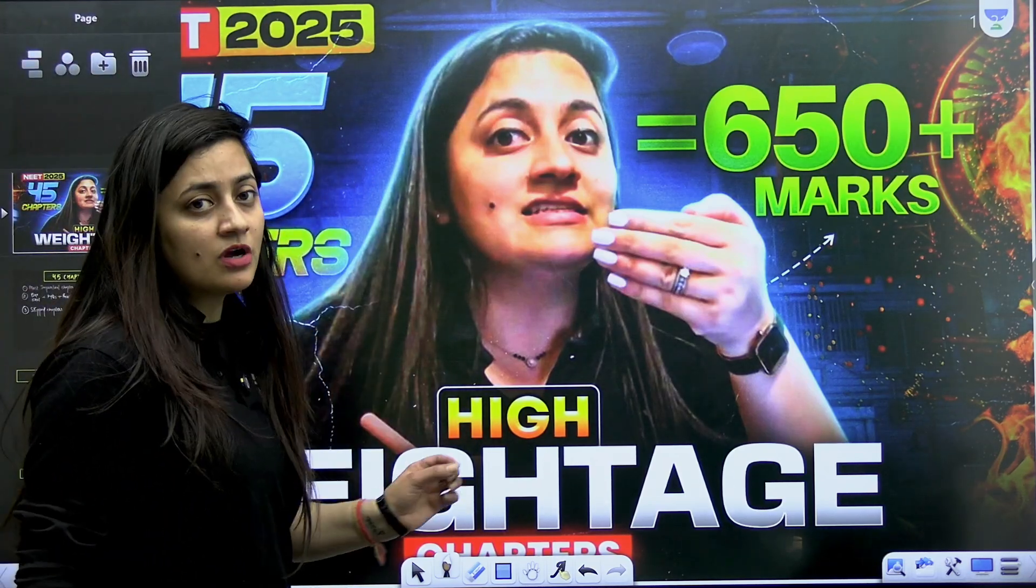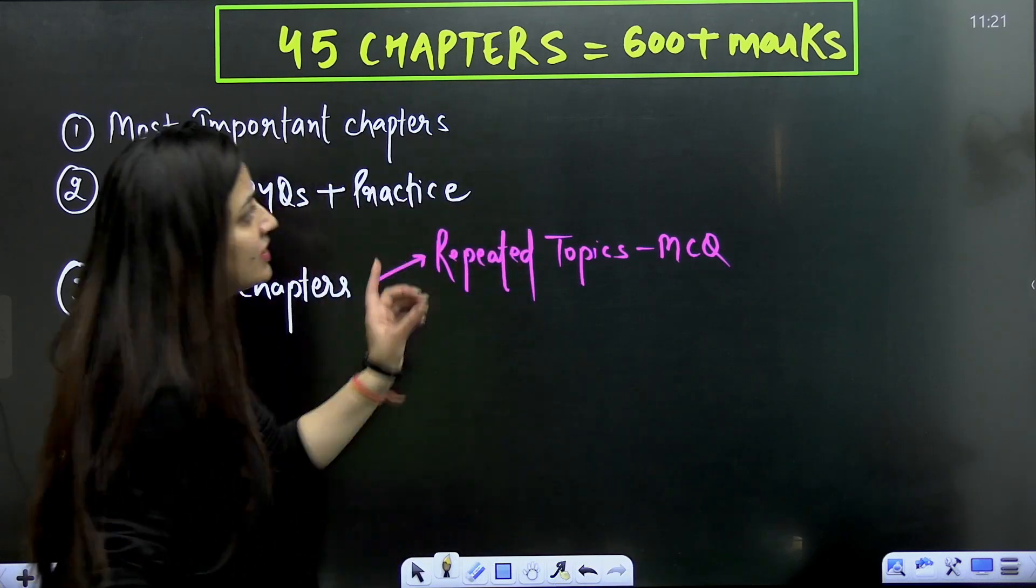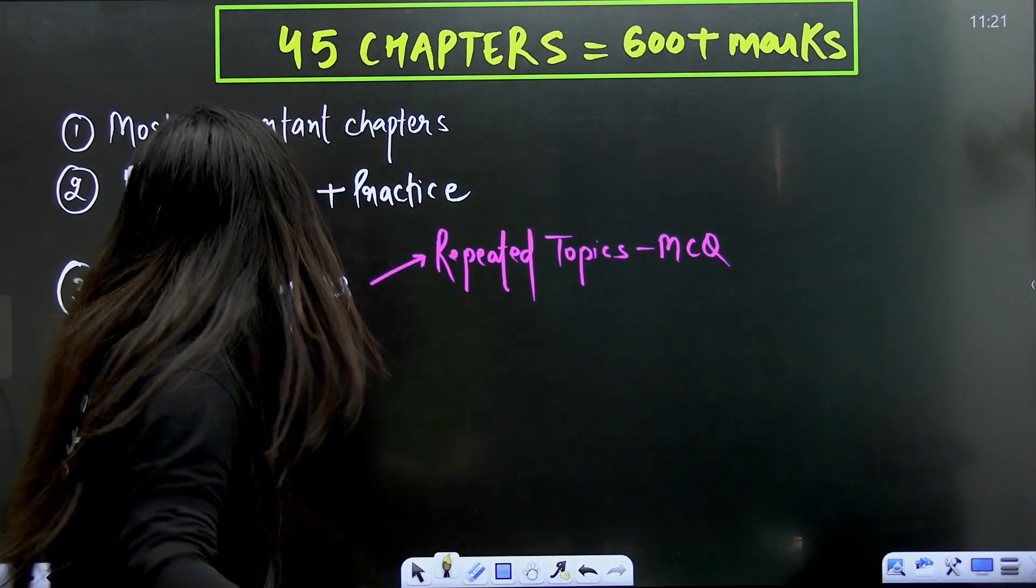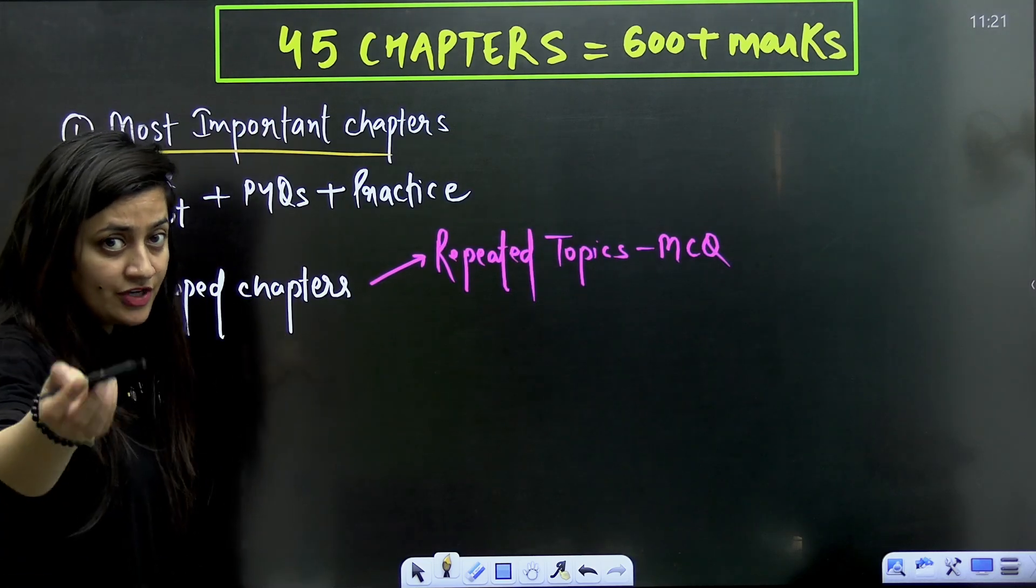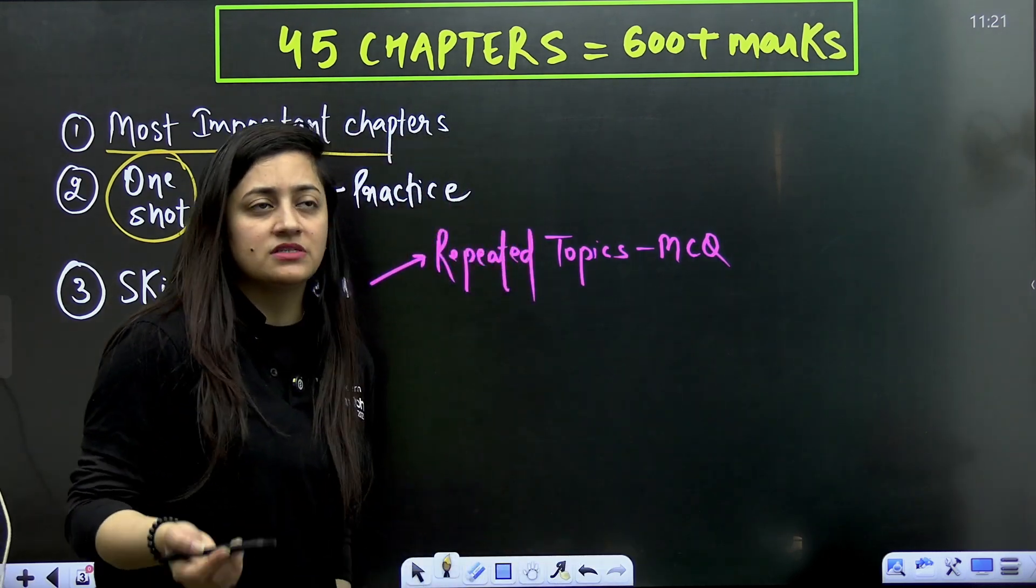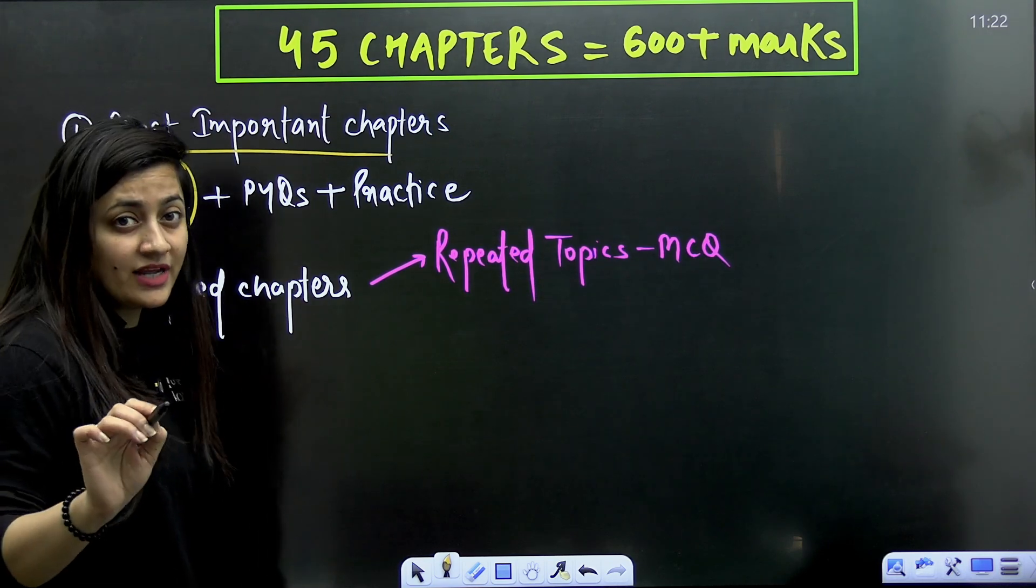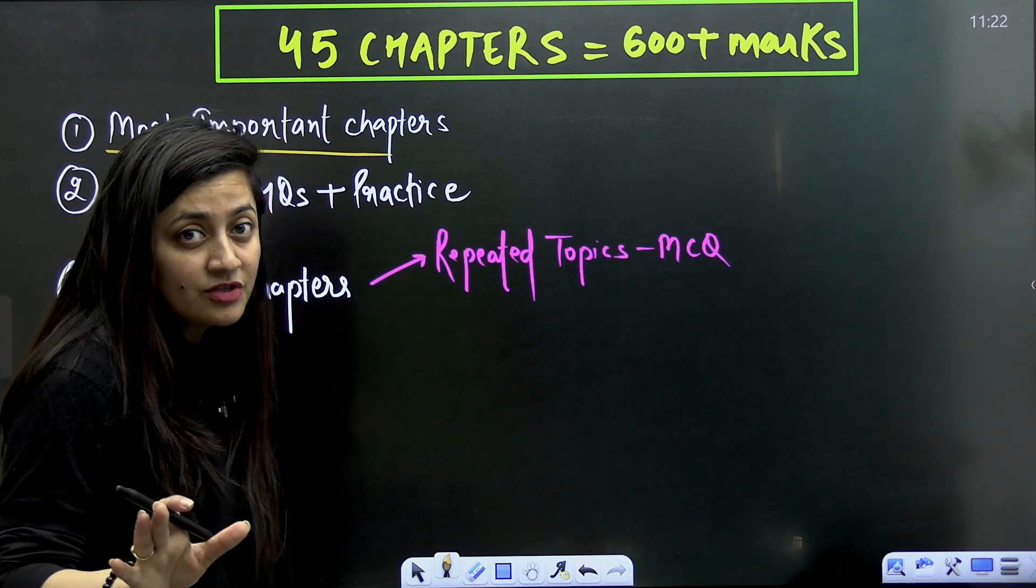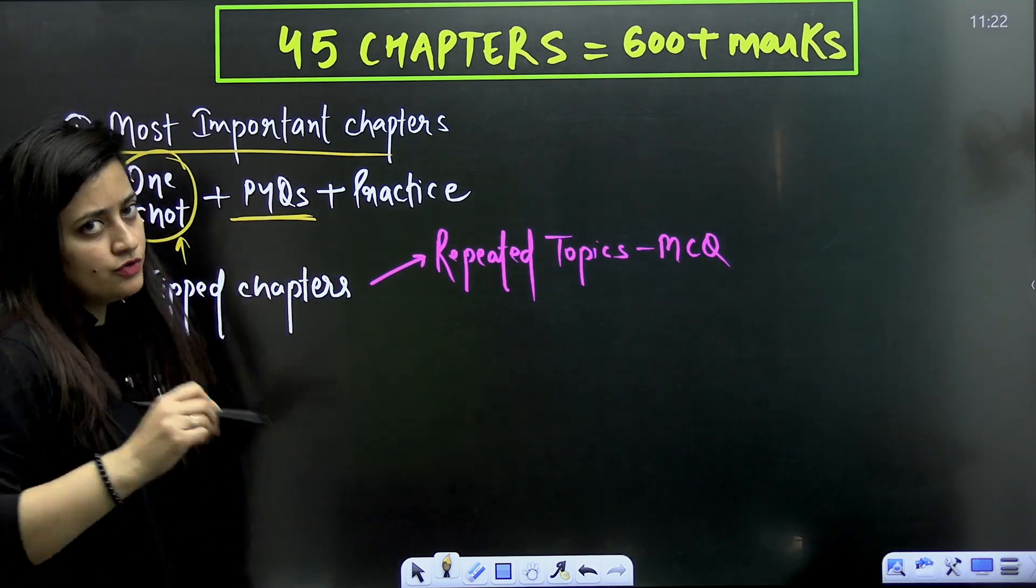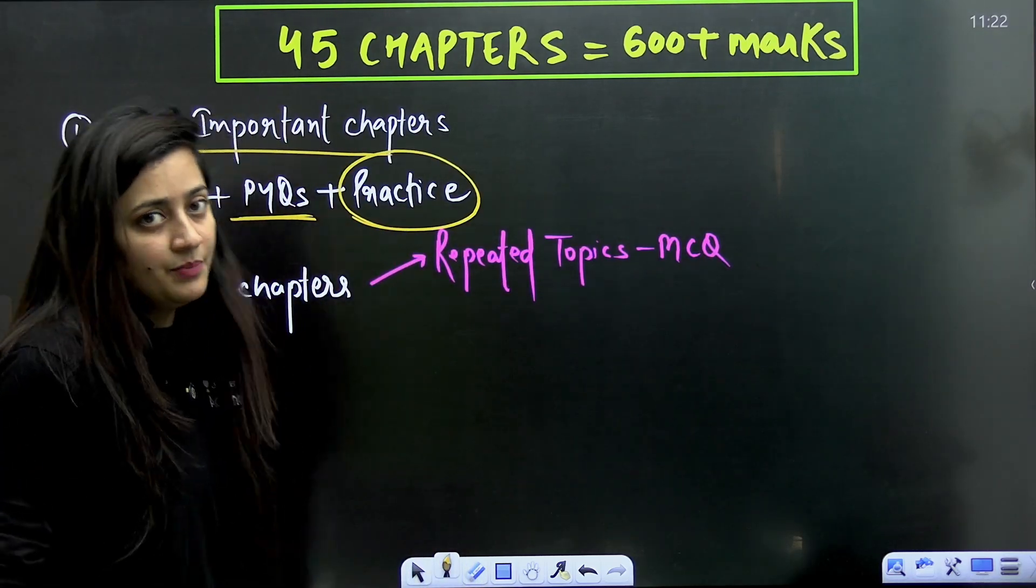So what are we going to talk about? The most important chapters of physics, chemistry and biology. Around 45 chapters they are, and 600 plus marks or somewhere between 600 to 650 you guys can score. First thing is we have the most important chapters. Then if out of these chapters there are certain chapters in which you don't know the concepts much, you can go for the one shot. But it has to be very quick. Right now I would say don't go for the detailed one shot, but the one in which briefly that particular topic is explained. Then you have to check the PYQs. You will get an idea what kind of questions can come in your paper. And after that you have to practice the questions from that particular chapter.